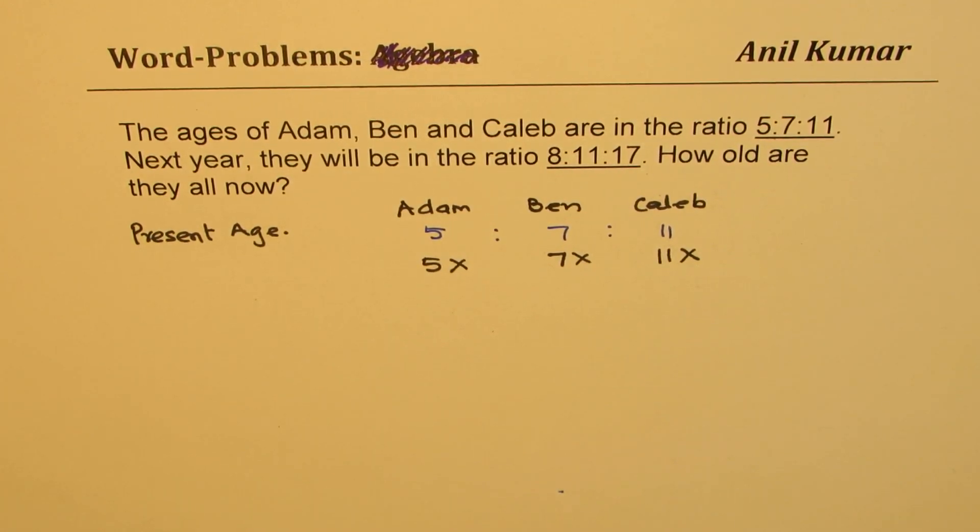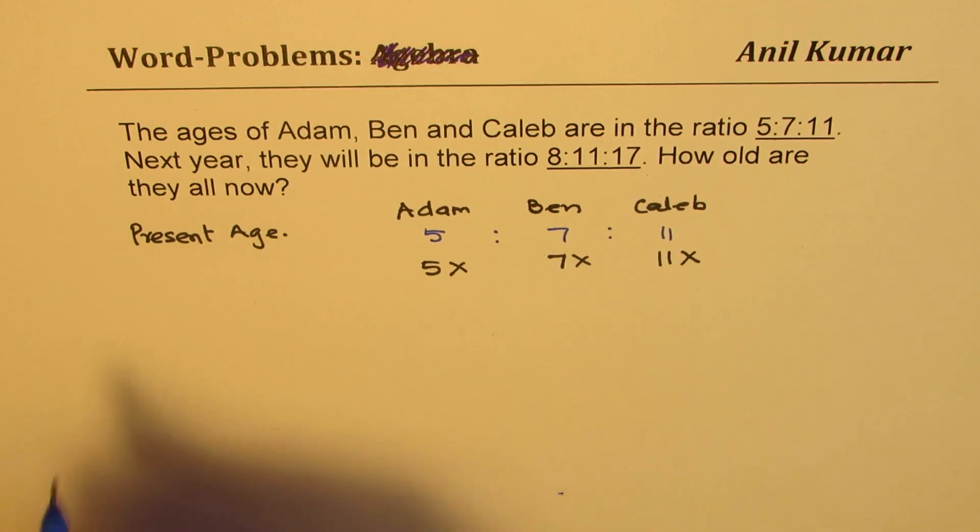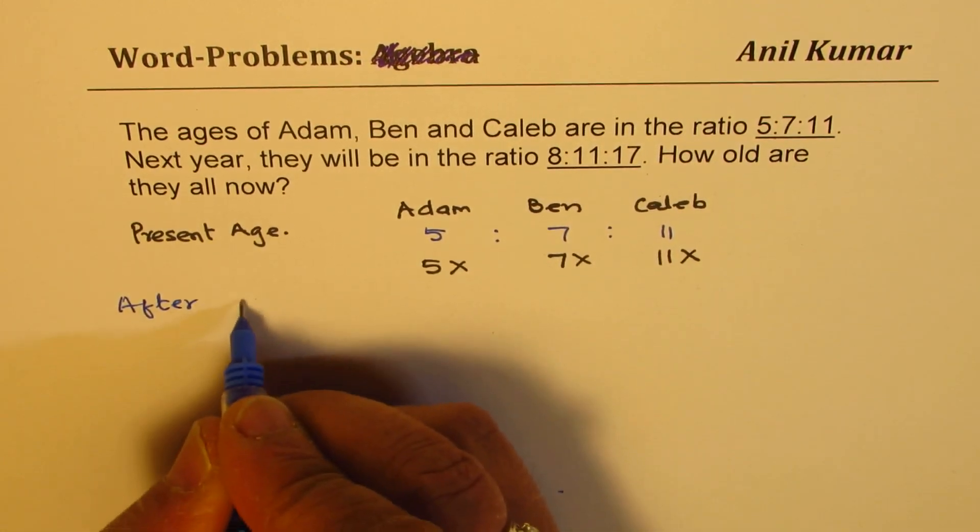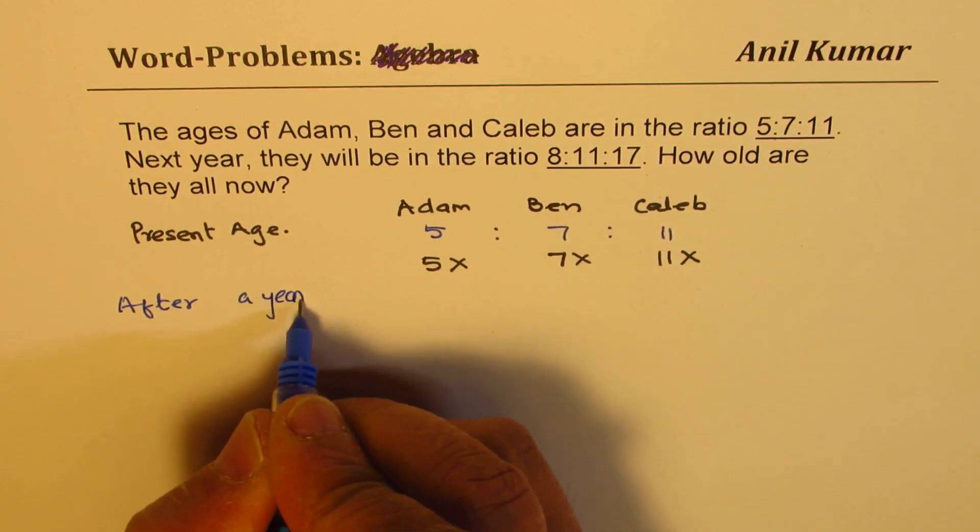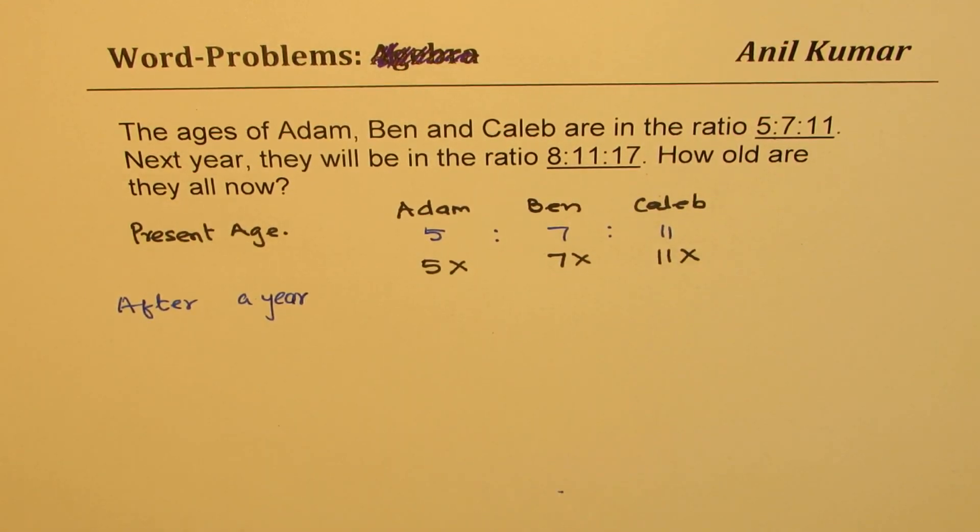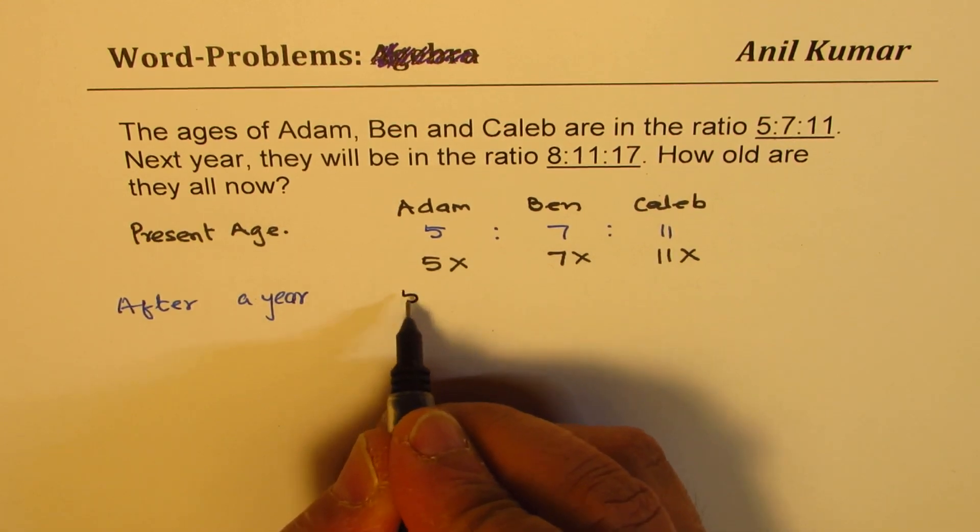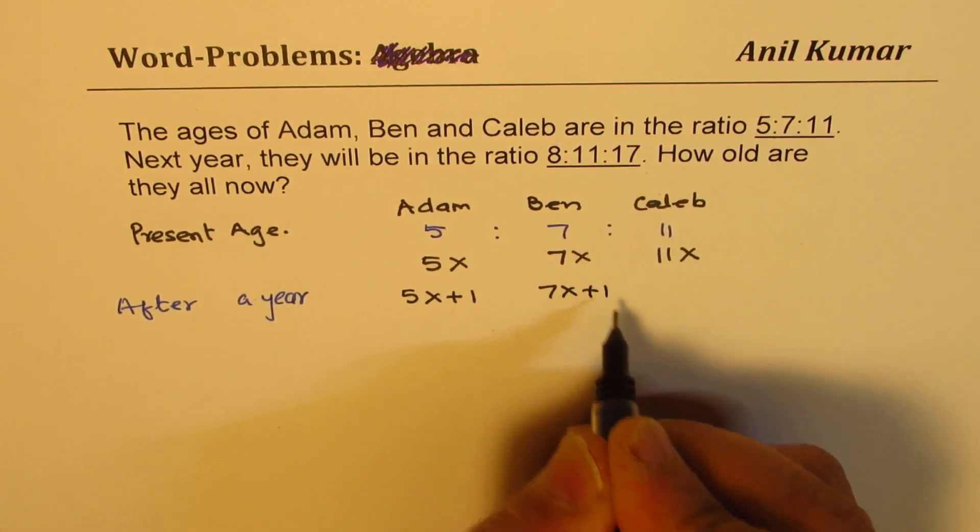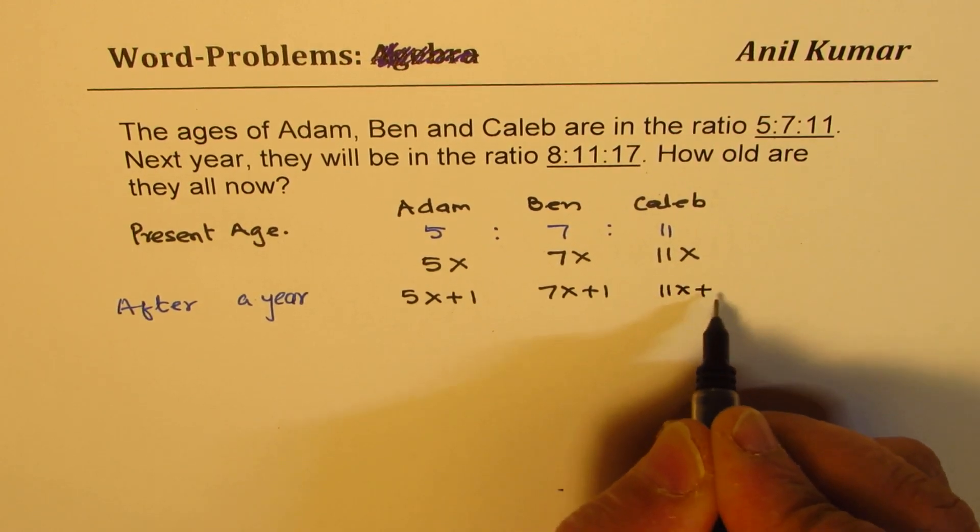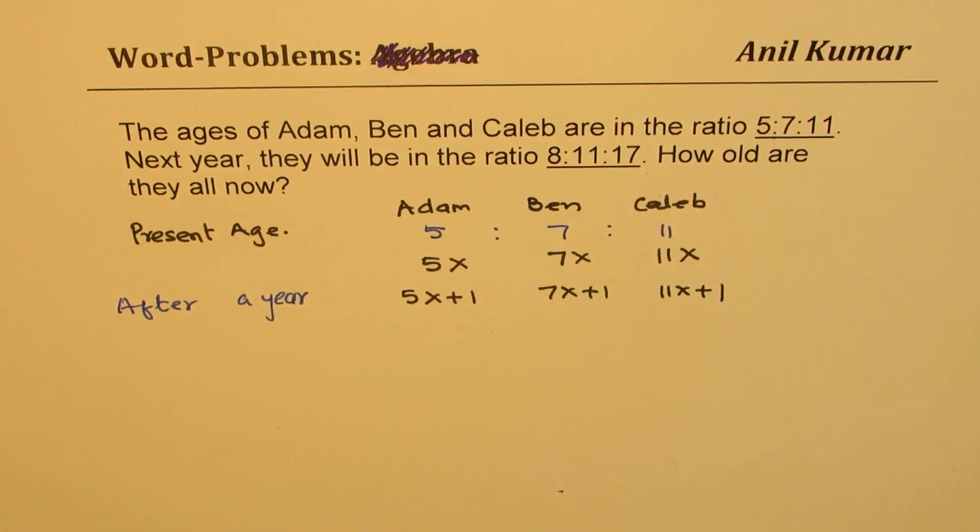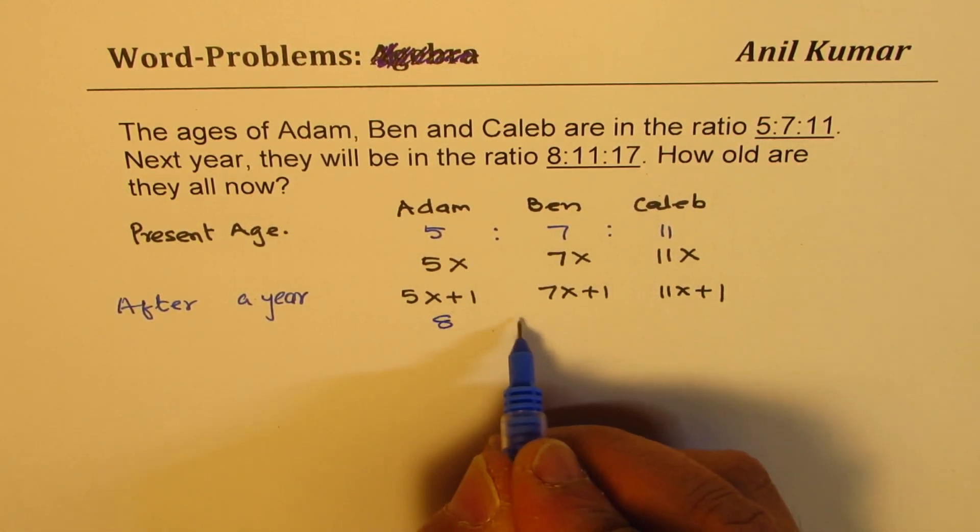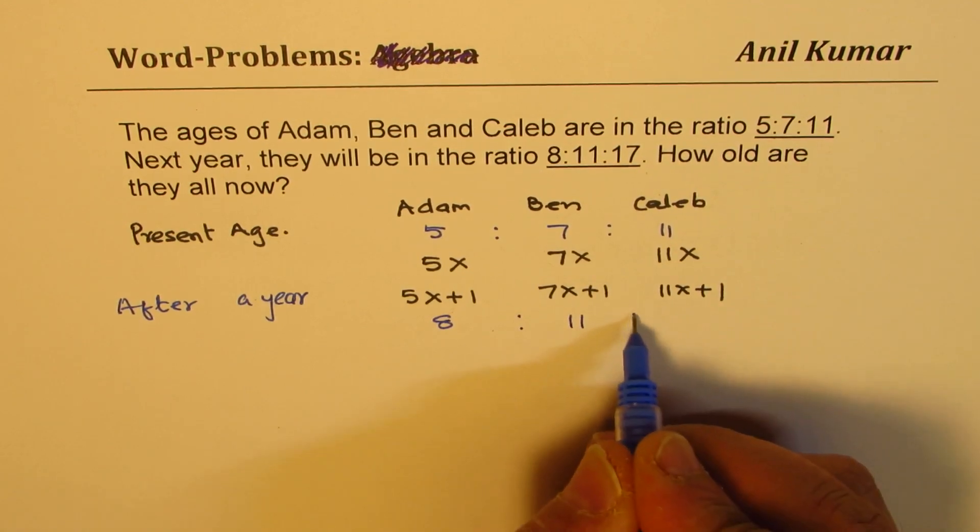Now what is going to be the age after one year? After a year, they will be one year older than this. So it is going to be 5x+1, 7x+1, and 11x+1. That is after a year. But at that time, the ratio of their ages will change and it will become 8:11:17.